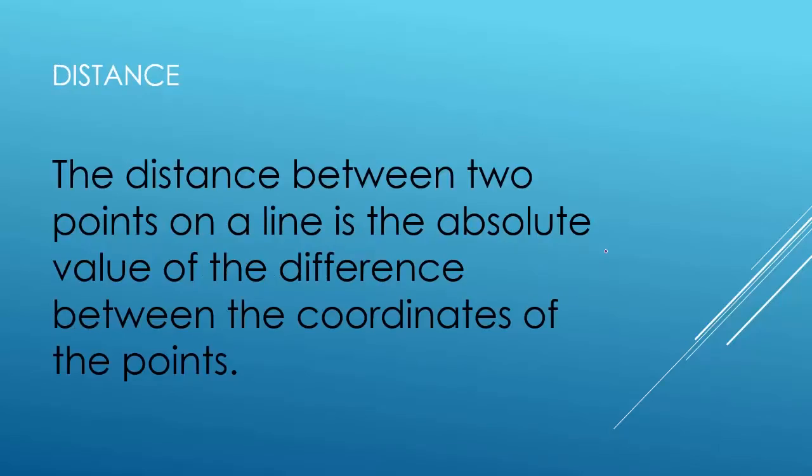Distance. The distance between two points on a line is the absolute value of the difference between the coordinates of the points. We will see an example of distance in a little bit.